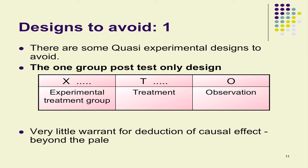Notice that the experimental group might look like a survey — we've got a group, we've done something to them, and then we observe the results. The answer is yes, which is why in a survey we're so careful to make sure sampling is done properly — random sampling or quota sampling or whatever. In this case, the experimental group has not been randomly selected or randomly allocated in any sense whatsoever. So we've not got that safety valve that we have in the survey. Avoid this one, say Cook and Campbell.